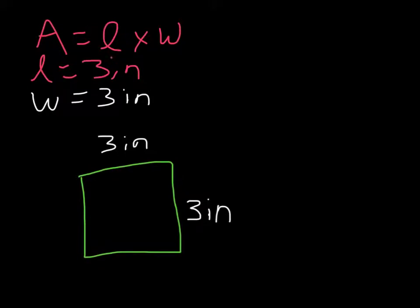And my width is 3 inches. Plug everything in. Area is equal to my length, which is 3 inches, times my width, which is 3 inches. Multiply it down. Area equals 3 times 3, which is 9. Inches times inches, inches squared.